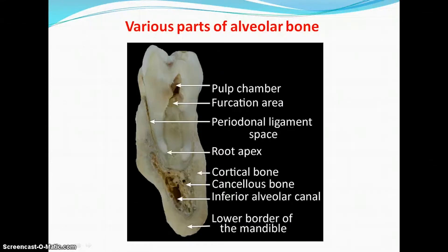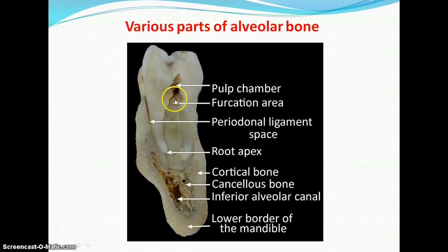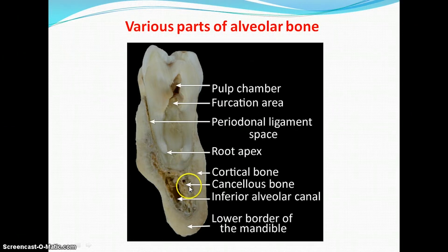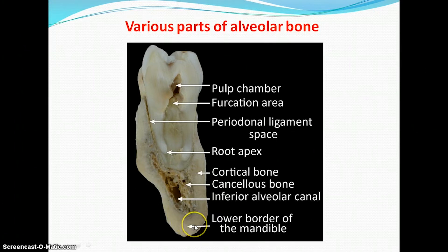Here you can see a cross section of the mandible at the molar region. This is the pulp chamber of the molar, this is the furcation area, and this thin space is the periodontal ligament space. This is the root apex. The thick lamellated bone visible here is the cortical bone. The spongy bone inside the cortical plates is the cancellous bone. This is the inferior alveolar canal, which provides passage for the inferior alveolar nerves and vessels, and this is the lower border of the mandible.